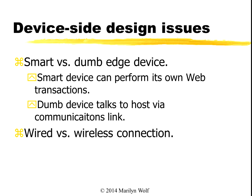On the device side, we have a couple of decisions to make. One is smart versus dumb device. In a smart device, it has its own internet connection, its own web software, and it can perform its own transactions — for instance, talk directly to the cloud and put data in the database. A dumb device uses a more traditional connection like Bluetooth or USB and can talk to a host computer, but it can't talk directly over the internet, so it relies on the host computer to transfer data to the internet.